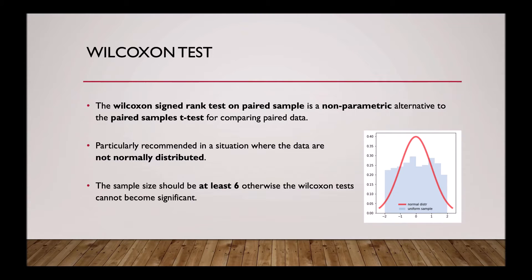When doing a Wilcoxon test, the sample size should be at least 6, otherwise you may struggle to find a significant result.